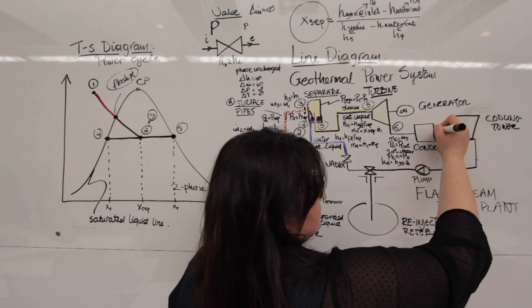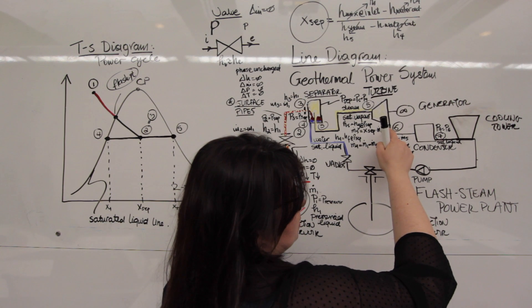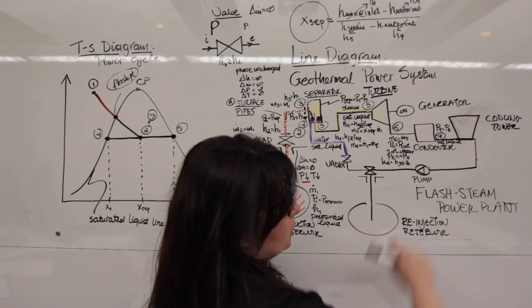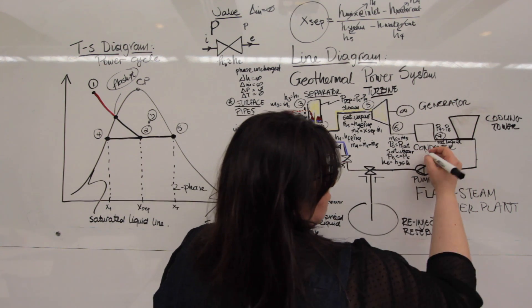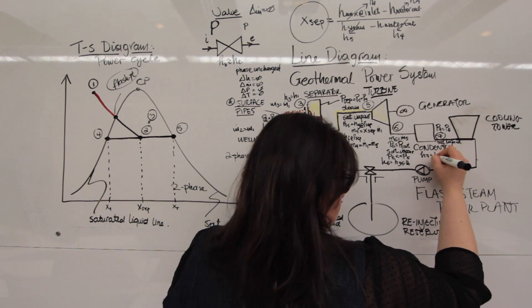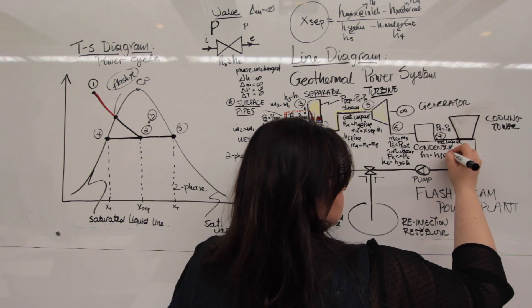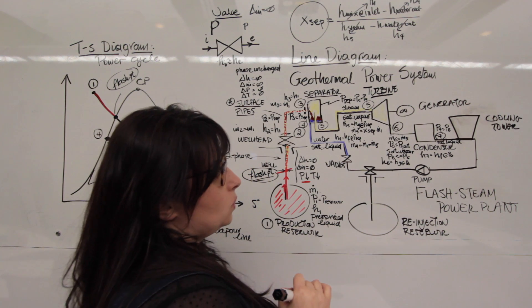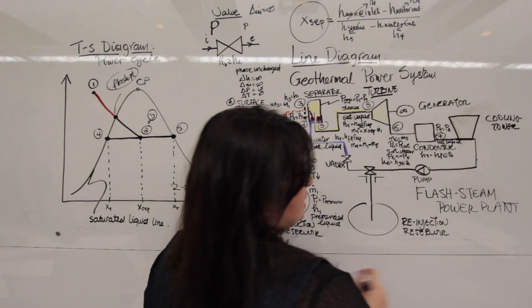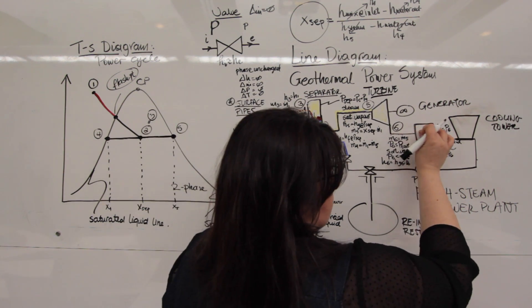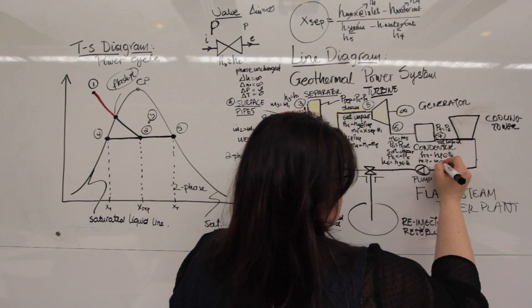This is achieved at constant pressure, so P7 is actually equal to P6, which is defined by the turbine outlet. We know our phase — it's saturated liquid — and we know the pressure, so we can look up the enthalpy. H7 is equal to Hf at P6. The condenser is a closed component with no mass losses, so whatever comes in at 6 will come out at 7: M-dot 7 is equal to M-dot 6.